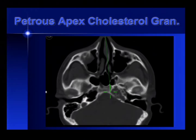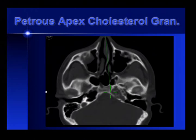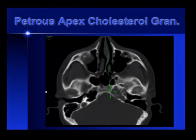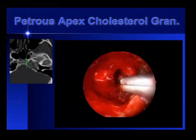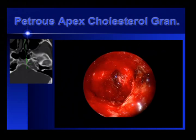Here is a small petrous apex granuloma. This young man has had an ear approach for cholesterol granuloma — it's been resected twice, and there's a piece of silastic sheeting right here. Now he has this lesion and he's getting headaches. This is a perfect endoscopic approach because we don't need to destroy the anatomy in this region. We can see the cholesterol granuloma coming out of there.